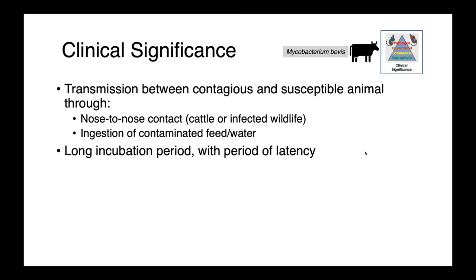Transmission of M. bovis between cattle can occur through a number of different routes. We can have direct nose-to-nose contact, either between cows or cattle and infected wildlife, or ingestion of contaminated feed or water. This is a disease that has a really long incubation period, including a period of latency, so it can be quite difficult to detect early infections, which makes control of the disease very difficult in endemic regions.